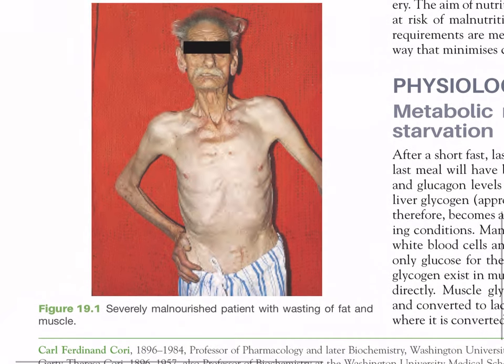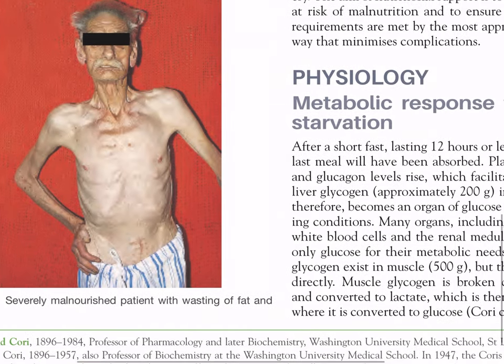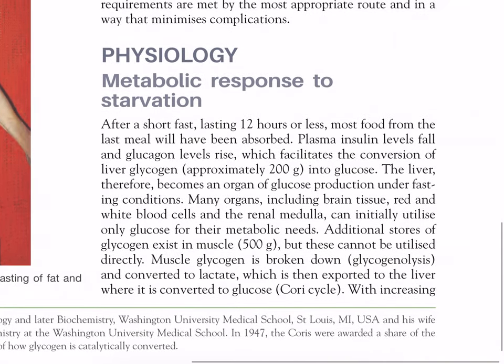Figure 19.1 shows a person who is severely malnourished with wasting of fat and muscles. Physiologic metabolic response to starvation: after a short fast lasting 12 hours or less, most food from the last meal will have been absorbed. Plasma insulin levels fall and glucagon levels rise, which facilitates conversion of liver glycogen (approximately 200 grams) into glucose. The liver therefore becomes an organ of glucose production under fasting conditions.